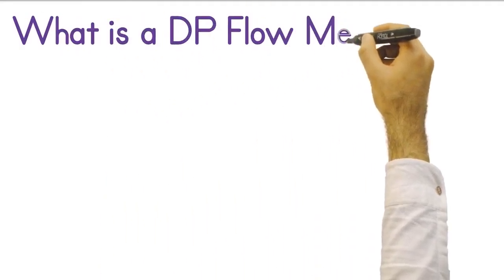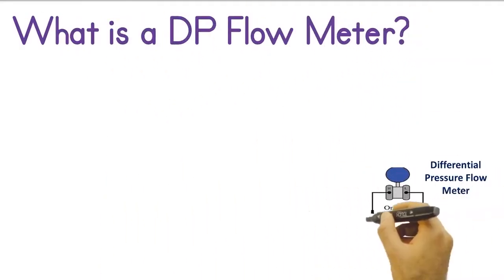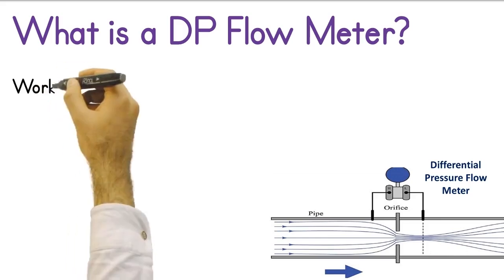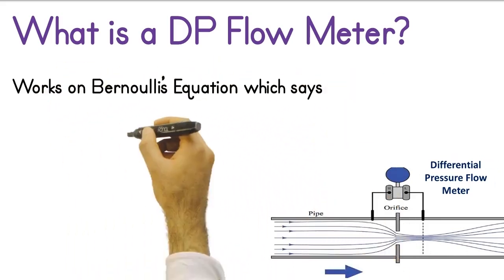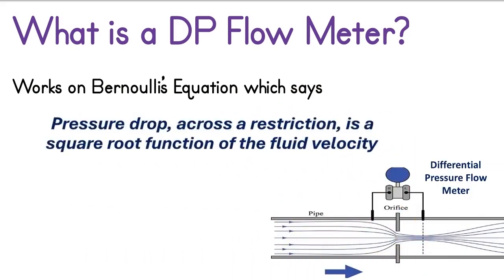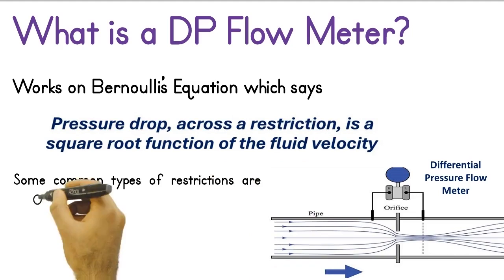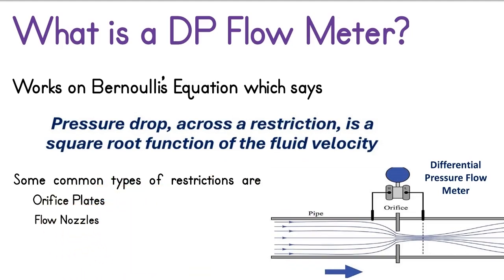What is a DP flow meter? In a differential pressure flow meter, the flow rate is calculated by measuring the pressure difference created by the flowing fluid. It works on Bernoulli's equation, which states that the pressure drop across a restriction is a square function of the fluid velocity. A restriction is inserted in the pipe to create a pressure drop. Common types of restrictions include orifice plates, flow nozzles, venturi tubes, and pitot tubes.